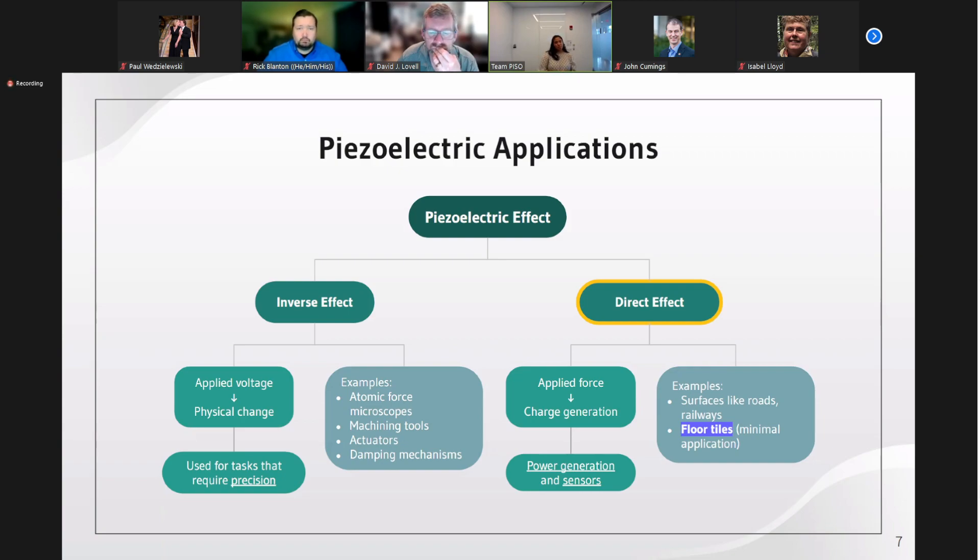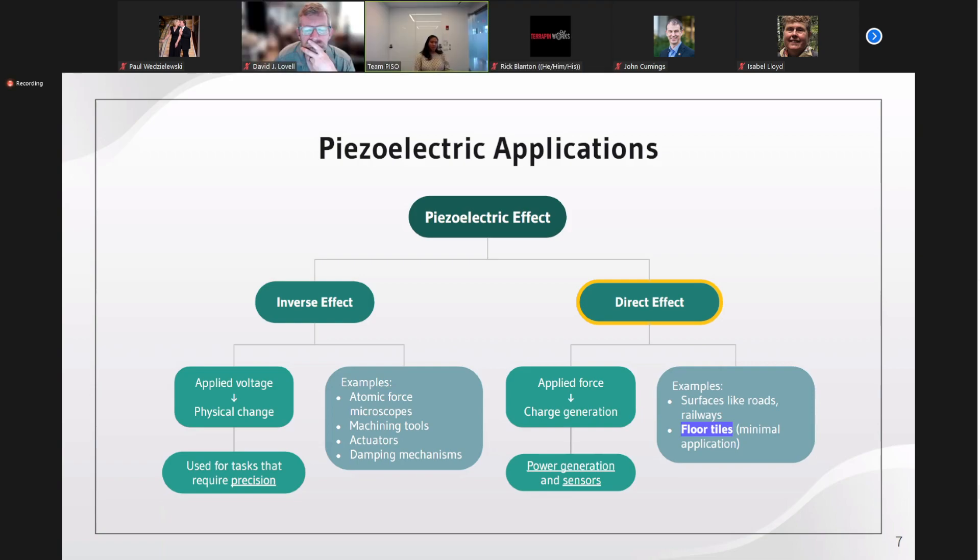As mentioned before, the piezoelectric effect works in two directions. The inverse effect is when a charge is run through the material and the physical shape is affected. This property is utilized in tasks requiring precision, with examples like atomic force microscopes, machine tools, actuators, and damping mechanisms. On the other hand, the direct effect is when an applied force affects the structure and charge is generated. This effect with respect to power generation is relatively underused and under-researched compared to the inverse effect. The idea has been theoretically applied to surfaces that receive a lot of pressure and deformation like roads and railways. We decided to focus on its utilization in floor tiles, specifically taking advantage of pedestrian traffic.